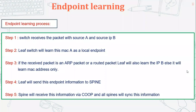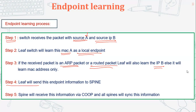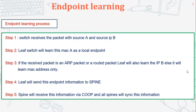Here is a quick recap of the endpoint learning process. When a leaf switch receives a packet with source MAC-A and source IP-B, it learns MAC-A as a local endpoint. If the received packet is an ARP packet or routed packet, the leaf also learns IP-B. As soon as it learns the local endpoint, it reports it to the spine to update the database. The spine then syncs that endpoint across all spines via COOP. Only local endpoints are reported — not remote endpoints.